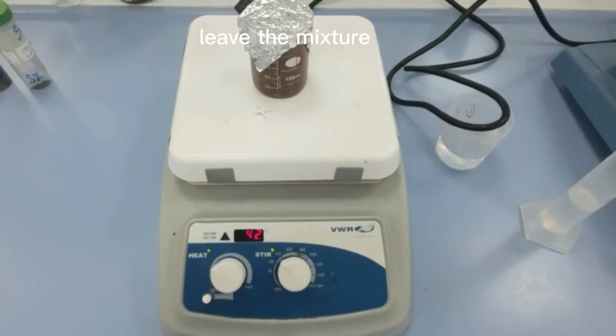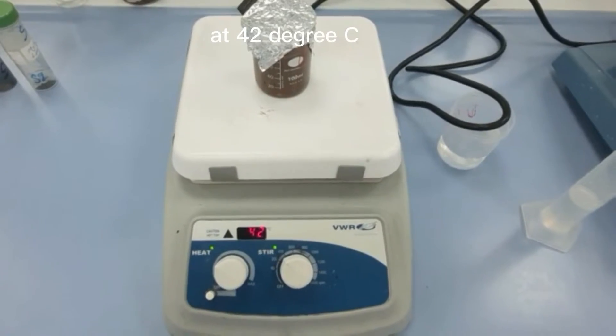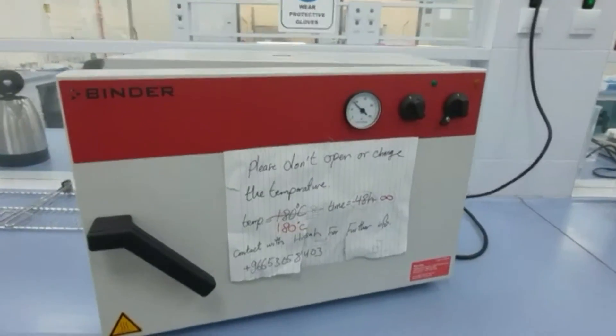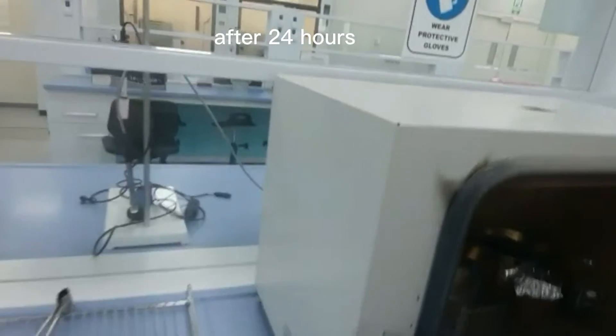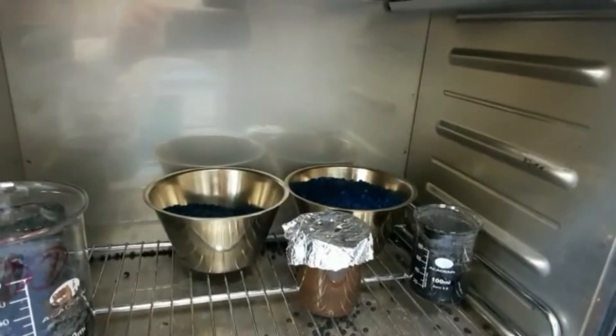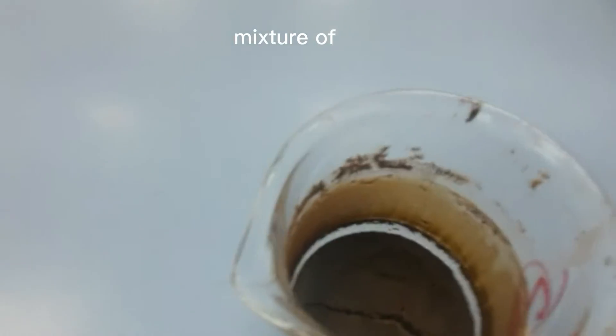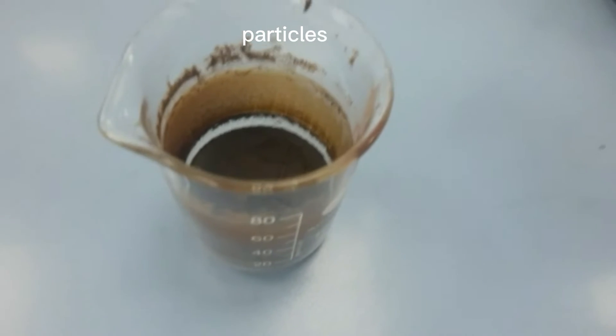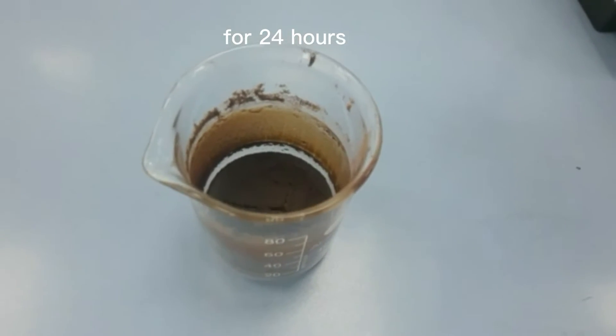Now leave the mixture for 24 hours at 40 degrees. After 24 hours, transfer the mixture into an oven. Final mixture of date palm and magnetic particles after drying for 24 hours.